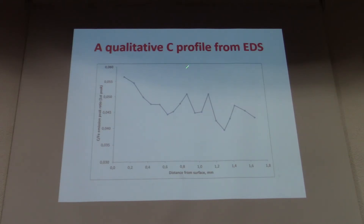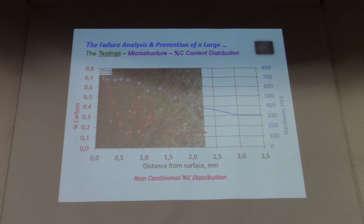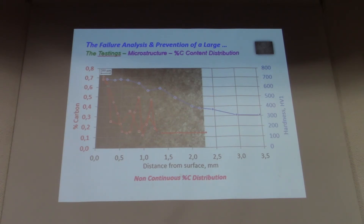What is strange is the carbon profile found from EDS with the scanning electron microscope — there are variations in carbon content. We also saw variation in micro hardness. We changed the instrument, but even with another instrument we found variation in the carbon content. The 0.6% carbon was confirmed by spectroscopic analysis, alongside the base material composition, and both instruments signaled a variation in the carbon content.